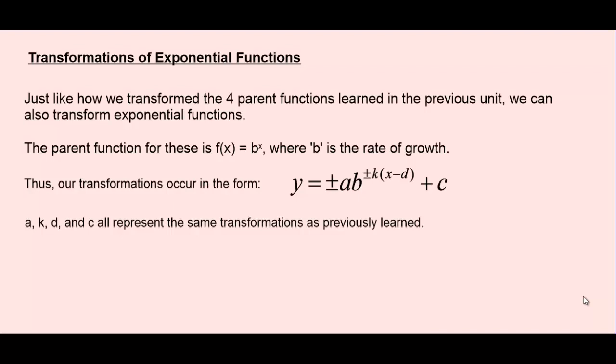And let's not also forget that anything relating to the x value is backwards thinking. So if you see a value of k that's less than 1, that will actually be a horizontal stretch. And if the d value inside the brackets happens to be subtracting, backwards thinking would suggest that we're actually going to be translating to the right.